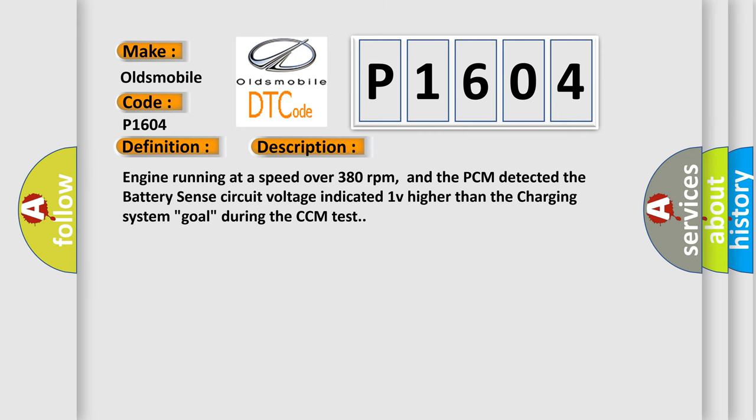Engine running at a speed over 380 revolutions per minute. And the PCM detected the battery sense circuit voltage indicated 1V higher than the charging system goal during the CCM test.